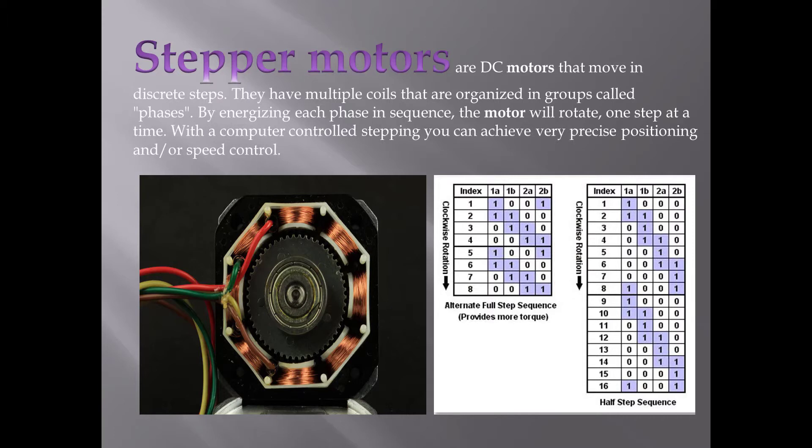What is the stepper motor? Stepper motors are DC motors that move in discrete steps. They have multiple coils as you can see in the figure, these coils are organized in groups called phases. By energizing these coils or phases in a specific sequence, the motor starts rotating in a particular direction one step at a time with a certain angle.